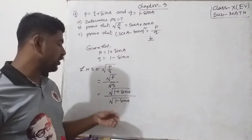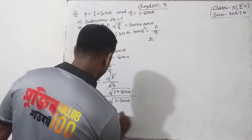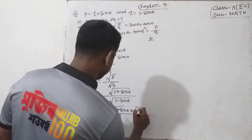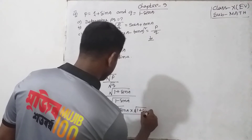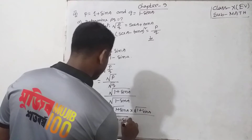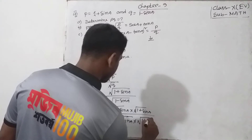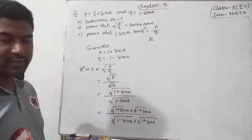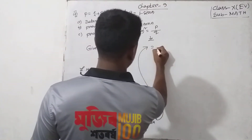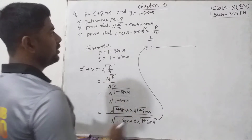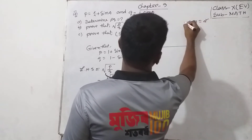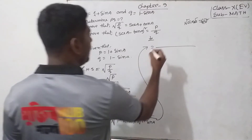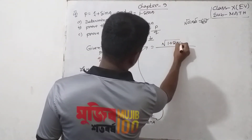Now, I multiply numerator and denominator by root over 1 plus sin A. So the numerator becomes root over 1 plus sin A into 1 plus sin A, which equals root over 1 plus sin A whole square. We know root over A into root over A equals root over A whole square.